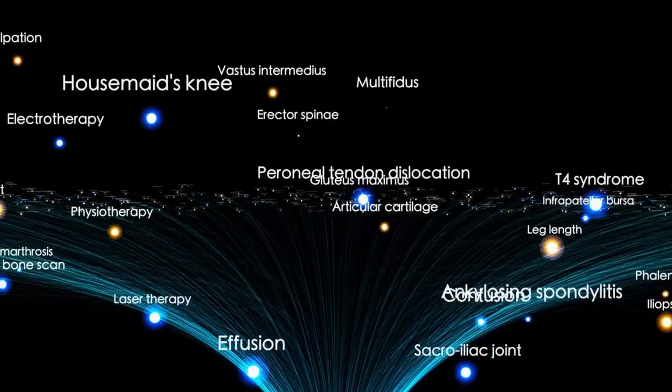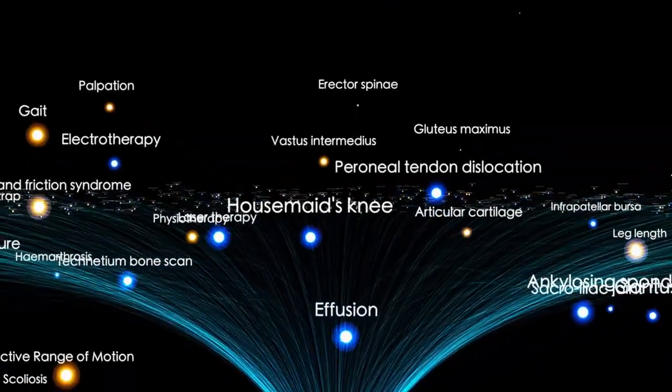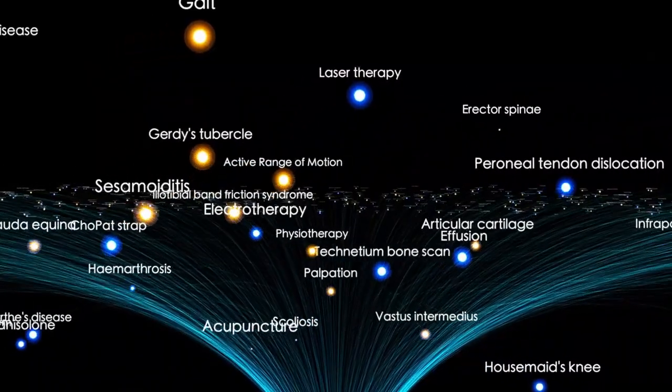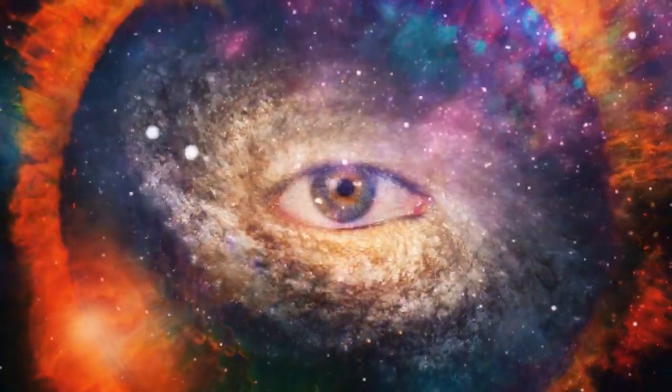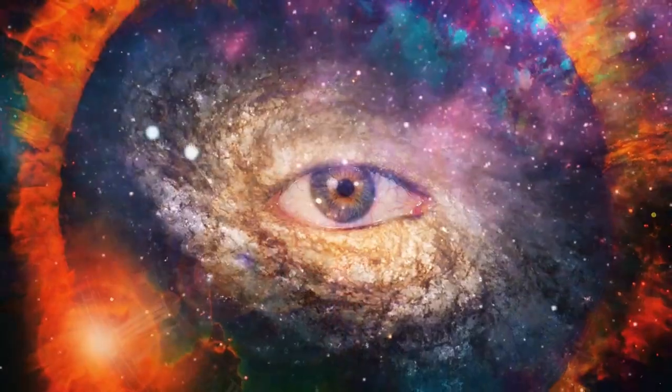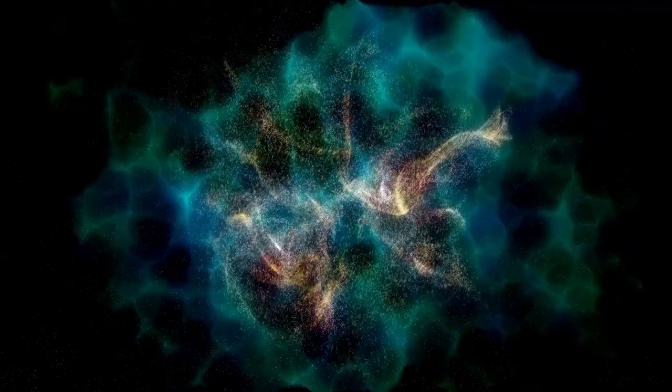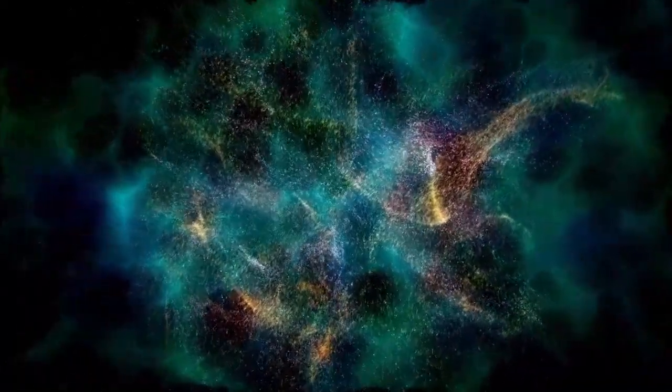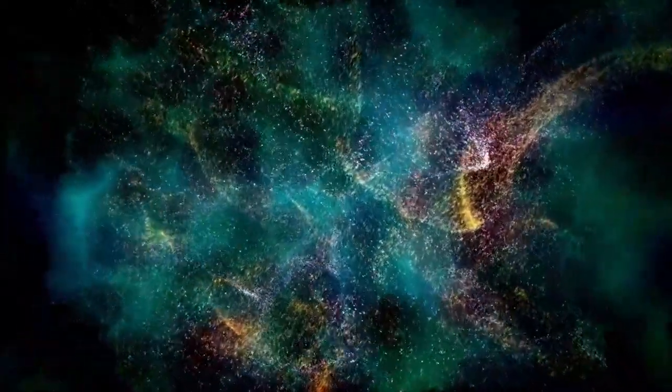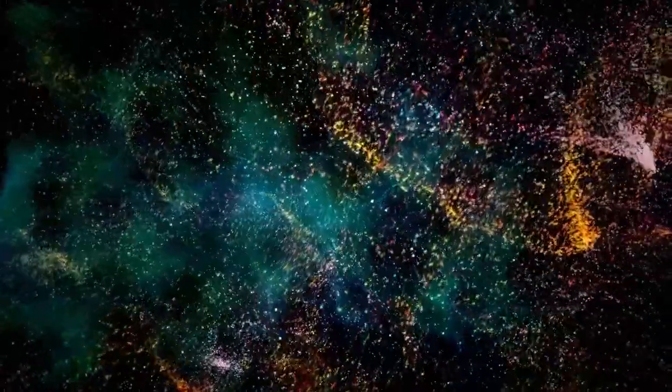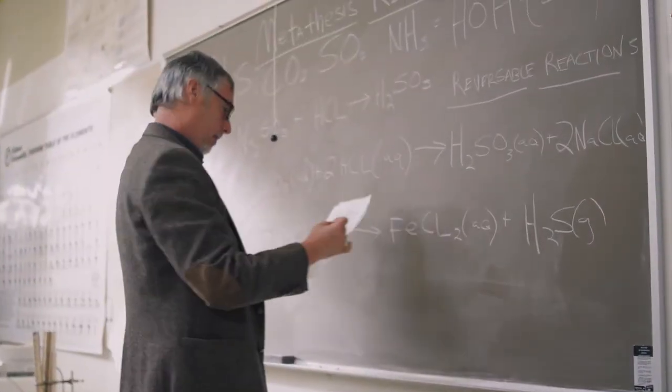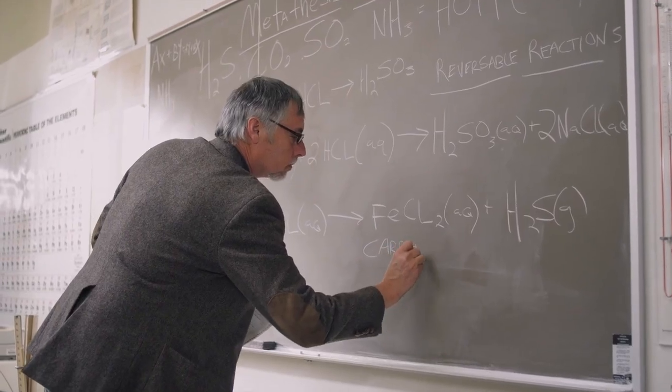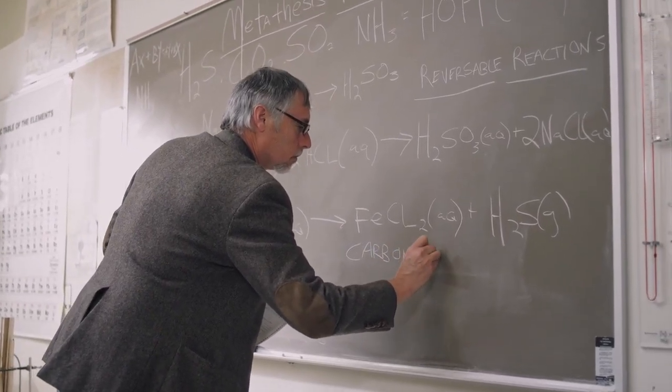The question of whether the universe came from nothing or whether something predated it remains a topic of intrigue. While we do not have all the answers, many physicists continue to search for an explanation. From my perspective, the idea that something can come from nothing seems implausible. For something to exist, there must be some form of material or components in place. So where did the material that triggered the Big Bang originate? What occurred in the first moments to create that material?